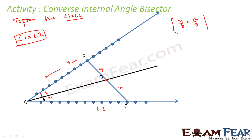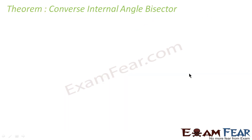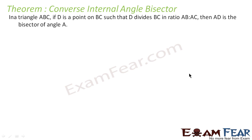We have seen that x by y is equal to 11 by 9. In this case it is the other way around — we found point D such that x by y is equal to 11 by 9 and then observed that angle 1 is equal to angle 2. The converse of the internal bisector theorem states: in triangle ABC, if D is a point on BC such that D divides BC in the ratio AB to AC, then AD is the bisector of angle A.